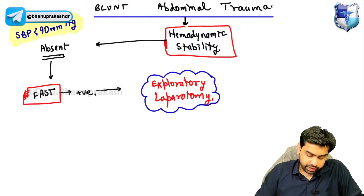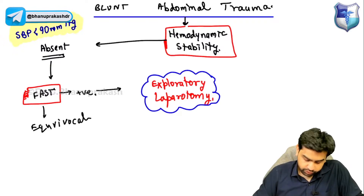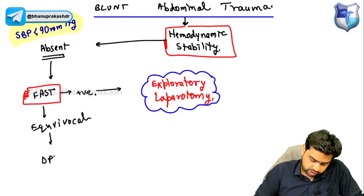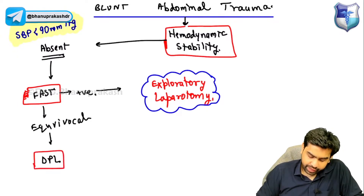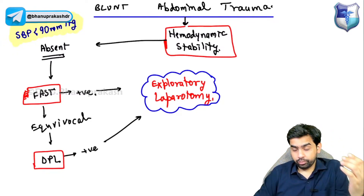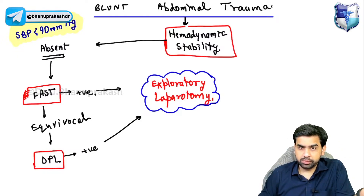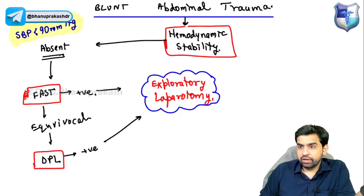But if the FAST is equivocal, then you perform a Diagnostic Peritoneal Lavage (DPL). If the DPL is positive, you take the patient for an exploratory laparotomy.